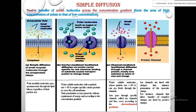For ion channels, transfer occurs based on the electrochemical gradient between the external and internal parts. For non-ionic substances in channels, transfer is across the concentration gradient, and the substance must be water-soluble and less than 80 angstroms in size. If the solute is a large molecule with size more than 80 angstroms and water-soluble, it cannot transmit through the lipid bilayer or the channel — it must use a carrier. Each type of molecule has a specific carrier, such as glucose carriers and amino acid carriers. This transfer also occurs passively but requires a carrier.